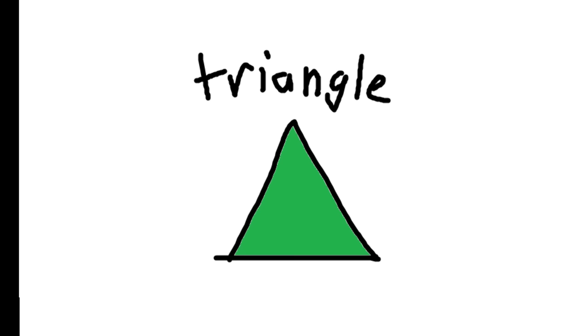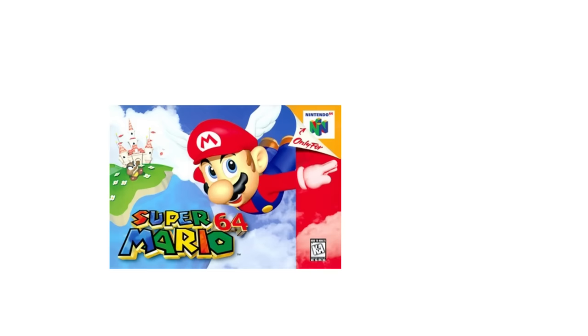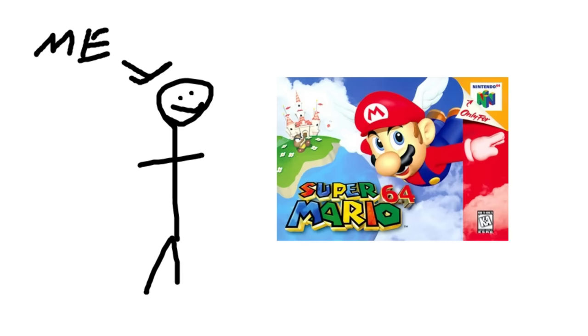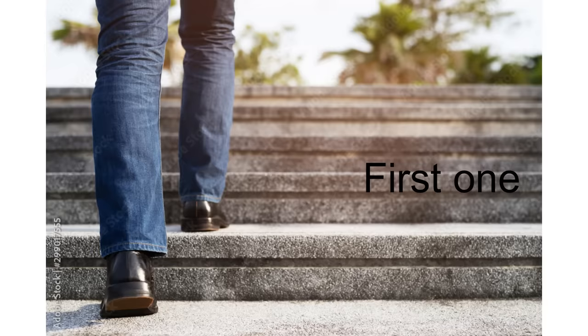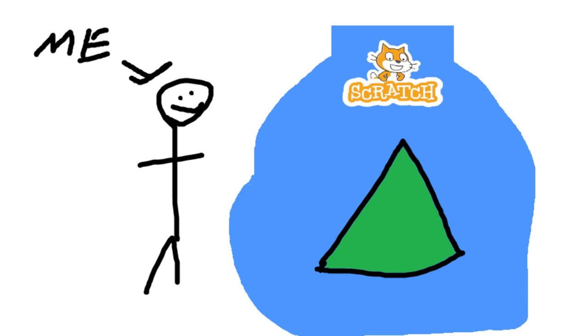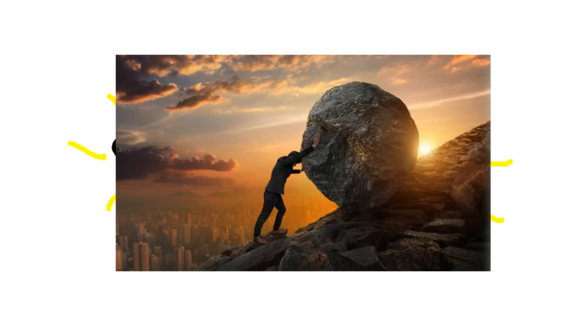A triangle is a shape with three sides. Mario 64 is a game made of triangles. I'm trying to make Mario 64 in Scratch, so the first step is to make a triangle. This challenge is going to be super hard.